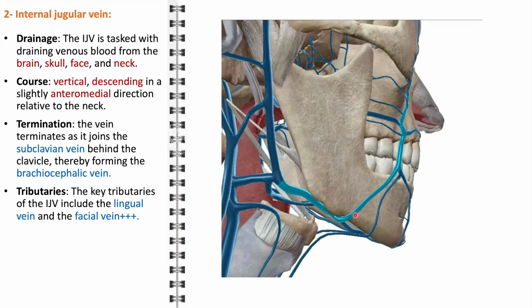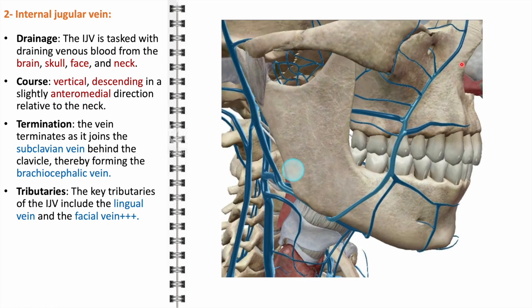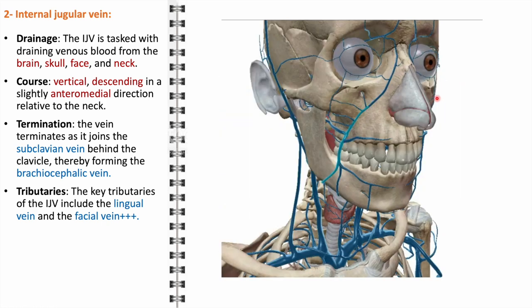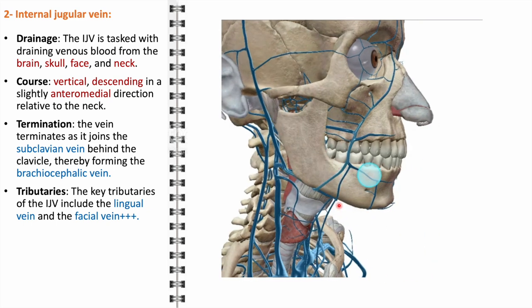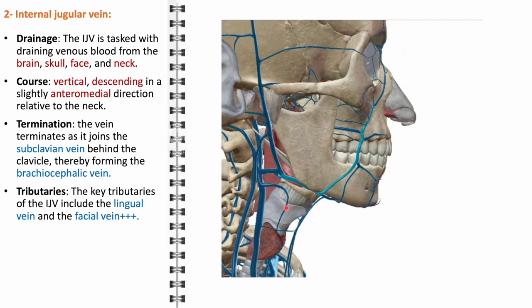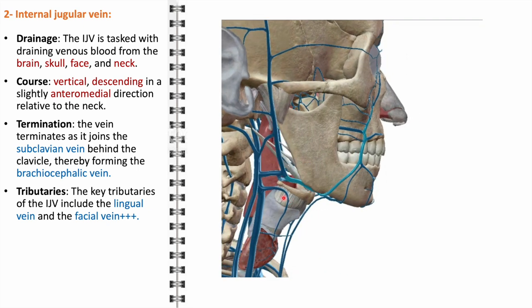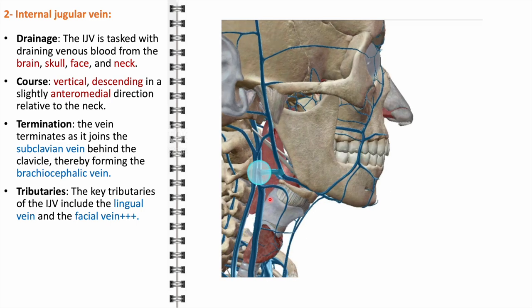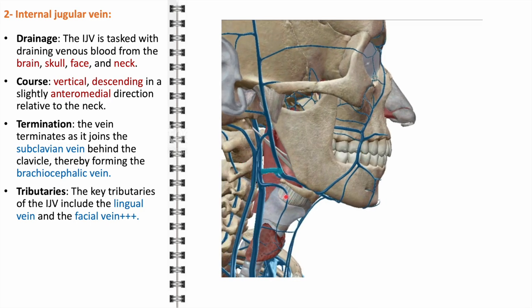The internal jugular vein connects with several veins that directly drain blood from facial tissues. These connections include tributaries such as the facial vein, which drains the anterior face, and the lingual vein, which drains the tongue and floor of the mouth. Through these tributaries, the internal jugular vein effectively gathers blood from the superficial and deep areas of the face.